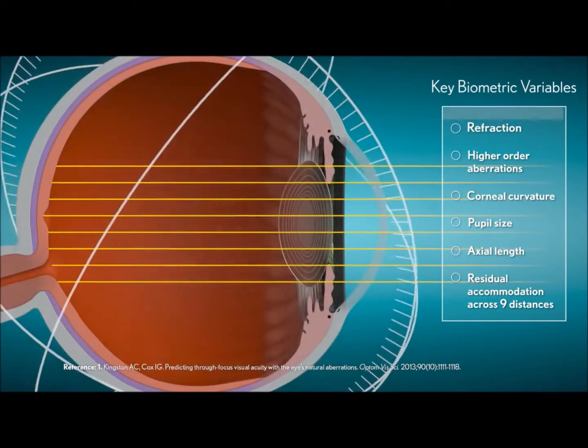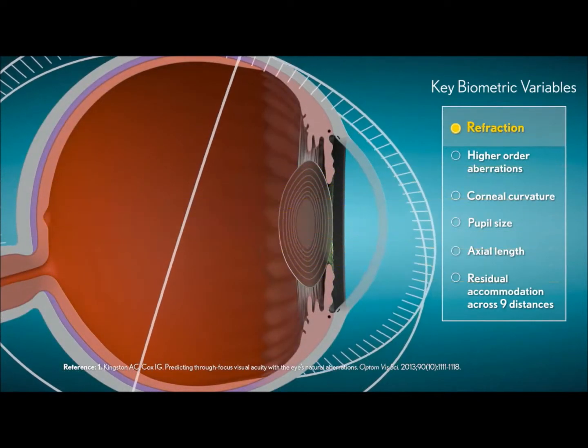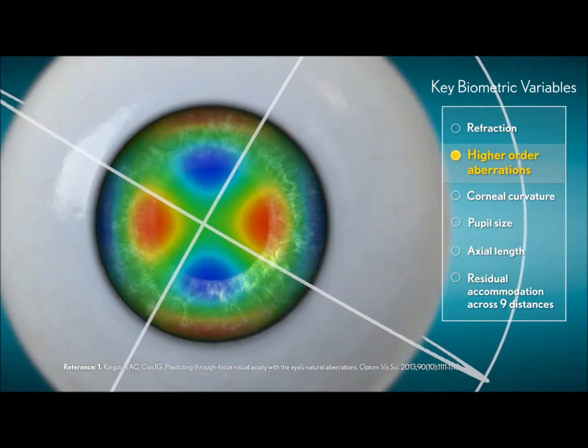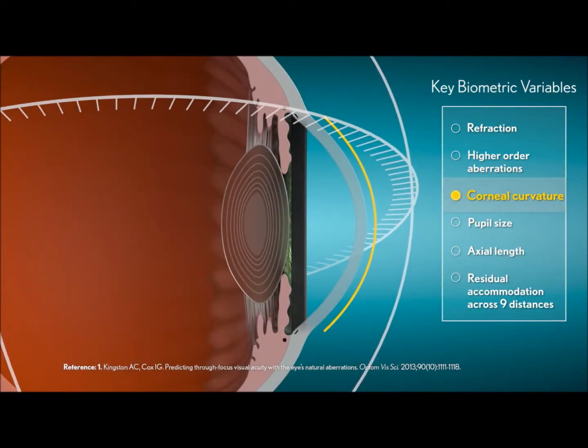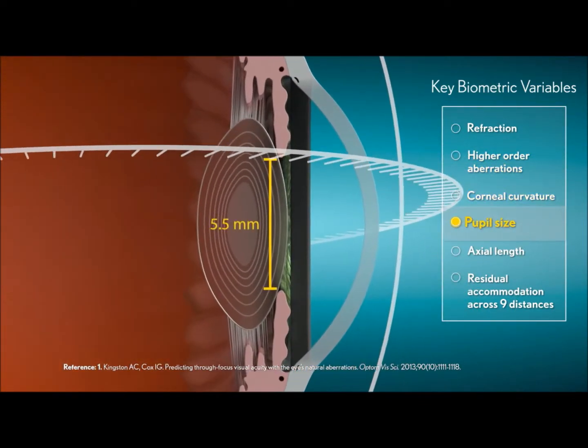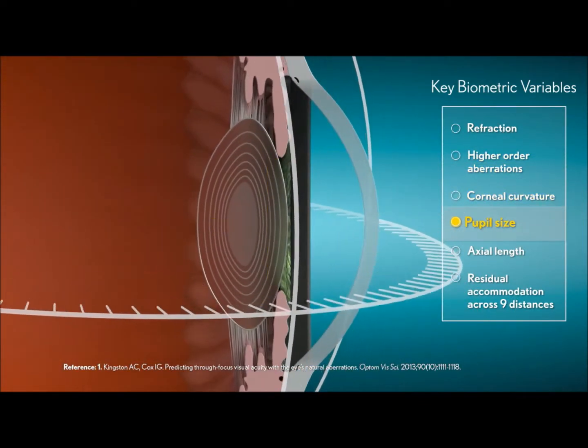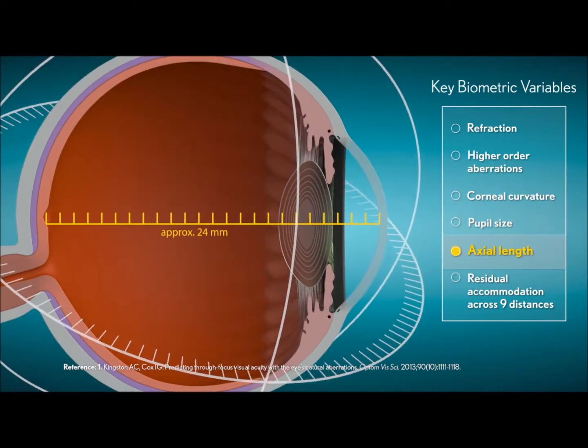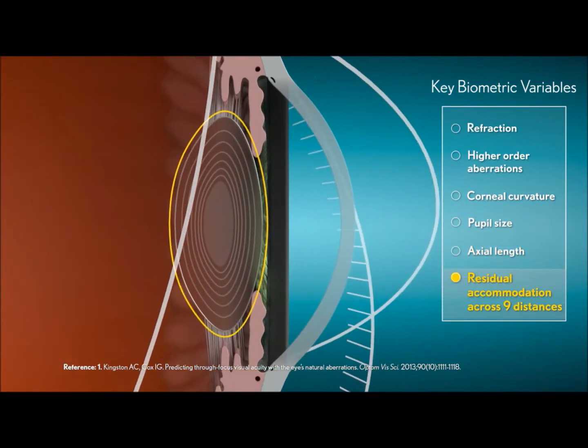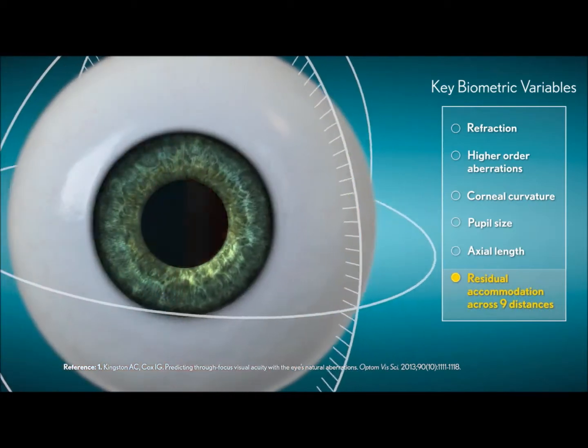To address these challenges, Bausch & Lomb began with a new presbyopic lens design research approach by analyzing the biometrics of a diverse population of patients. We assessed multiple vision-related variables. These biometric measurements went beyond the standard evaluation of refraction and pupil size to include variables such as higher order aberrations and residual accommodation. We started the research effort by entering literally thousands of data points into our proprietary virtual image resolution testing system.